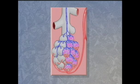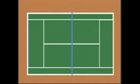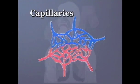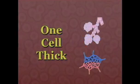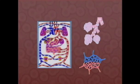Though these sacs are very small, they are large in quantity — it's estimated that there are approximately 300 million air sacs. If laid out flat, their total surface area would cover approximately half a tennis court. Each alveolus is covered by a dense network of tiny capillaries, which are the smallest blood vessels in the body. Both the alveoli and the capillary membranes are only one cell thick, allowing for efficient transfer of gases from the lungs to the blood.